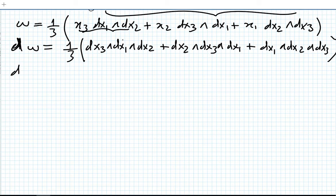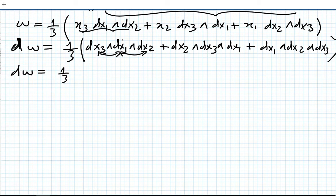Now I can reorder the first term. For dx₃∧dx₁∧dx₂: if we switch two elements we change the sign, but then we have to switch again, so we change sign again. That gives us a plus, so dx₃∧dx₁∧dx₂ equals dx₁∧dx₂∧dx₃.